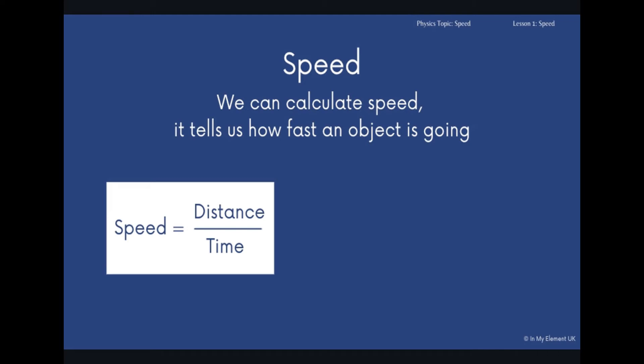You can write the equation like this, speed equals distance over time. Something that we really recommend is that you learn this formula triangle here. So the D represents distance, S for speed, T for time.